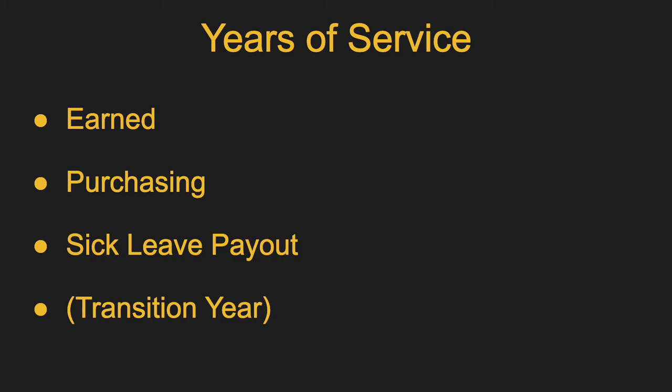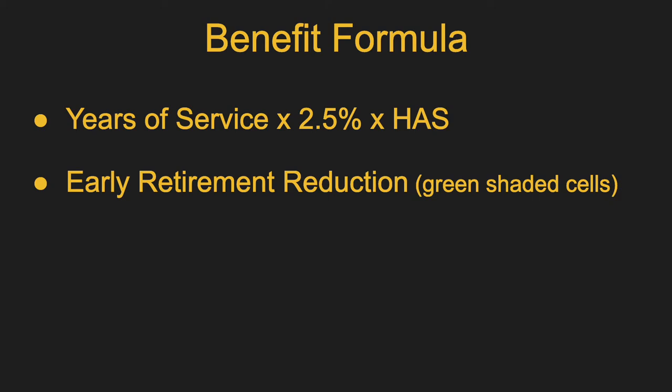After which table you use and how your highest average salary is calculated comes years of service. This is a big part of the formula. The majority will likely be earned service — every year you work, you get a full year of PERA service credit. You can also purchase service credit. Sick leave payout might get you another month. And for districts that offer a transition year, that can actually take away a year of service. The benefit formula for a full retirement at PERA is: years of service times 2.5% times your highest average salary. For example, with 30 years of service, 30 times 2.5 is 75% — you would get a benefit equal to 75% of your highest average salary.